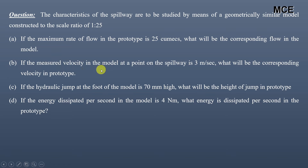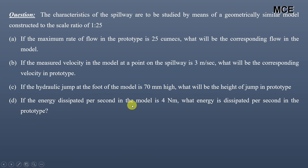If the measured velocity in the model at a point of the spillway is 3 meters per second, we have to find the corresponding velocity in the prototype. If the hydraulic jump at the foot of the model is 70 mm high, we have to find the height of the jump in the prototype. And if the energy dissipated per second in the model is 4 newton-meters, what energy is dissipated per second in the prototype?